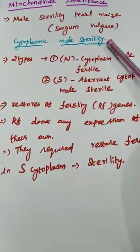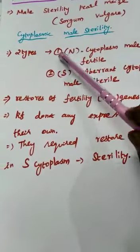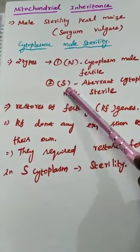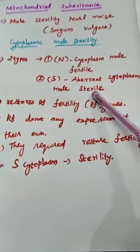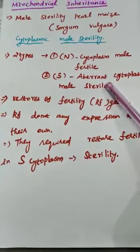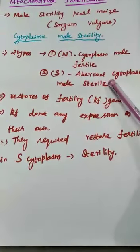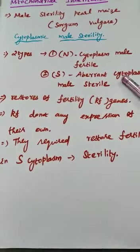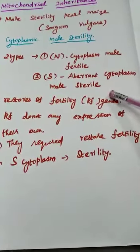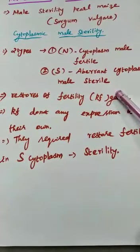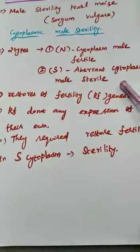In Sorghum vulgare there are two types of cytoplasm: one is normal cytoplasm, which represents a male-fertile condition, and another is sterile cytoplasm, which represents a male-sterile condition. Both cytoplasm types are crossed with each other, and reciprocal crosses are also performed. In both crosses the F1 generations differ from one another, similar to Mirabilis jalapa.